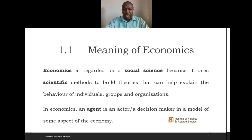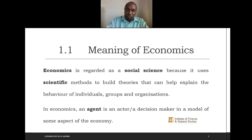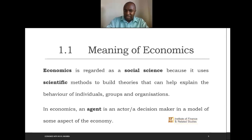We regard economics as a social science because it uses scientific methods to build up theories and models that help explain the behavior of individuals, groups, or organizations. This individual, groups, or organization is the society that we're talking about, and we use scientific methods to come up with these models.